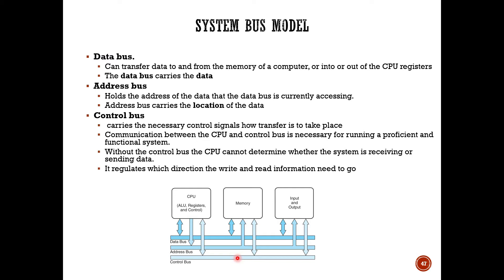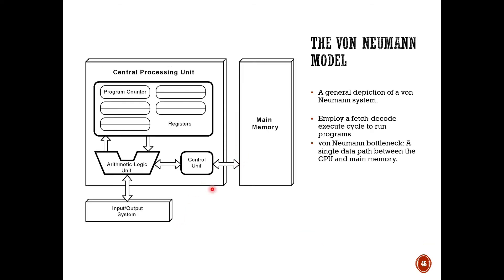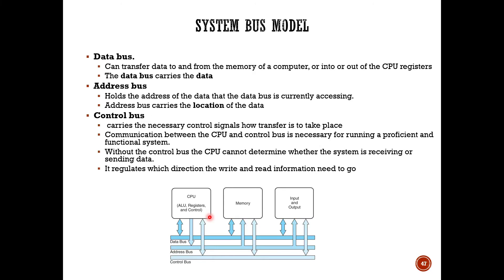Without the control bus, the CPU cannot determine whether the system is receiving or sending data, so it's very important. All these buses are very important. As you can see, there are multiple ins and outs to get into memory, input, output, and the CPU — whereas in the original von Neumann model there is only one path. That's why this system bus model is an extension of the von Neumann model.